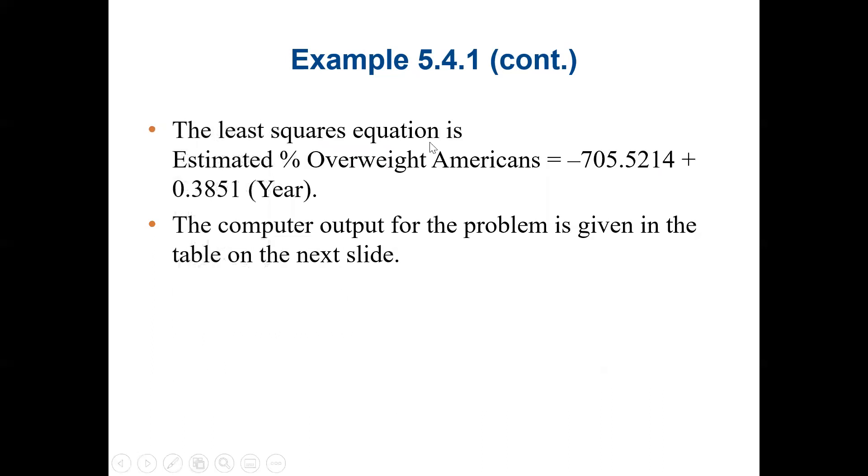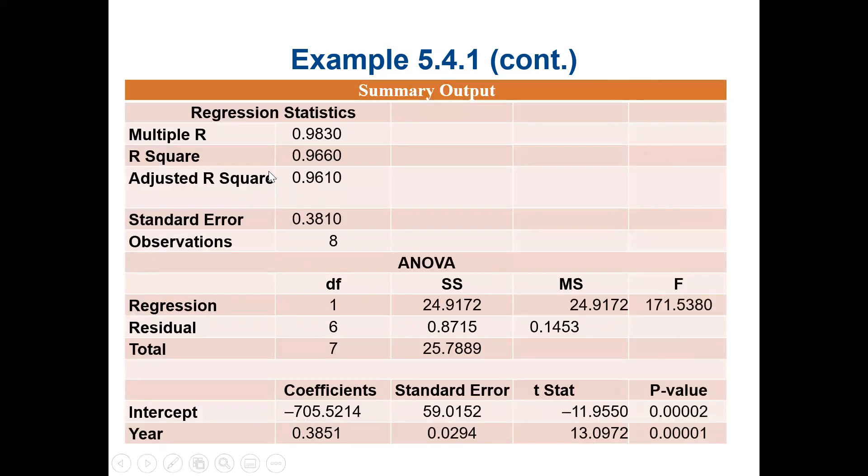The least square equation is the estimator. In this case, our independent variable will be time in years. Our y-intercept is negative 705.5214 plus our slope is 0.3851 times the year. That will be the computer output. In our previous lectures, we went through the steps of generating the regression equation and the best fit line using Microsoft Excel.